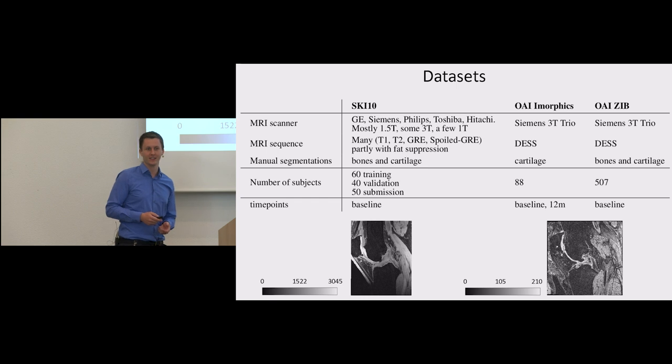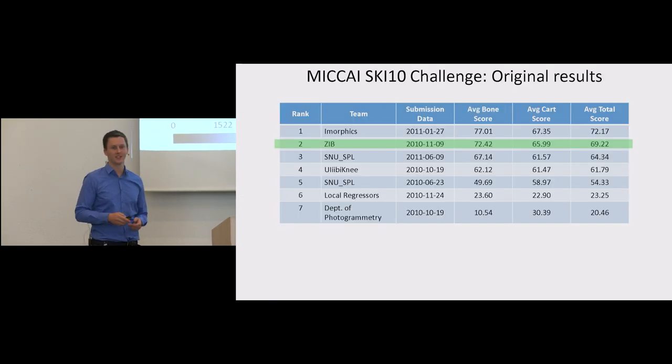Don't get confused here. For time points, baseline means time point zero and 12 months is 12 months later. We have got a different data set, an OAI data set. 88 segmentations of cartilage were provided by iMorphics, and at our institute, ZUSE Institute Berlin ZIB, we created manual segmentations for bones and cartilage for 507 subjects.